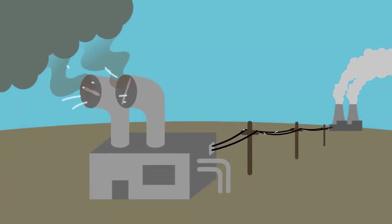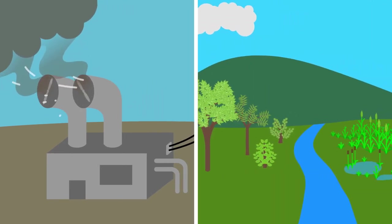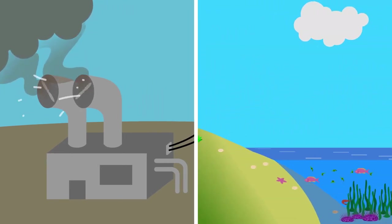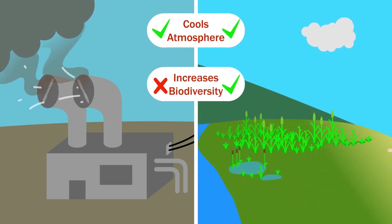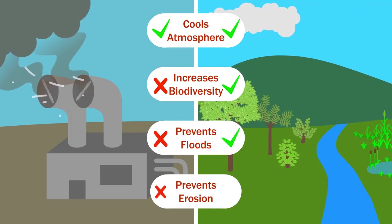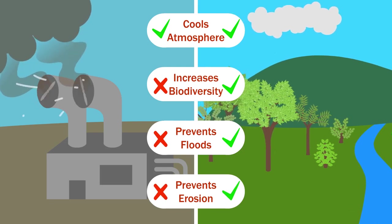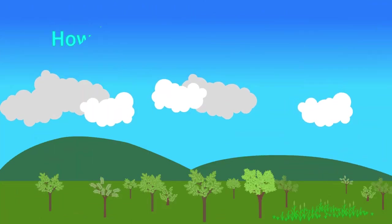Unlike high-tech geoengineering schemes, forests, wetlands, grasslands, and marine ecosystems bring numerous benefits beyond just cooling the atmosphere. They increase biodiversity, they can prevent floods and prevent erosion. But for now, let's talk about how they stabilize the weather and promote cooling.